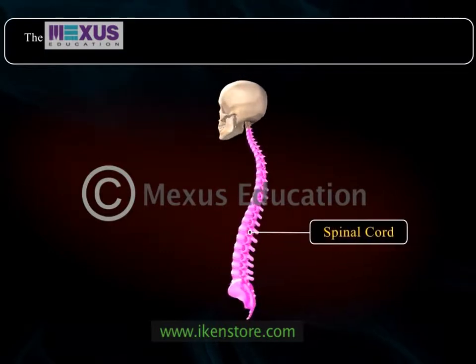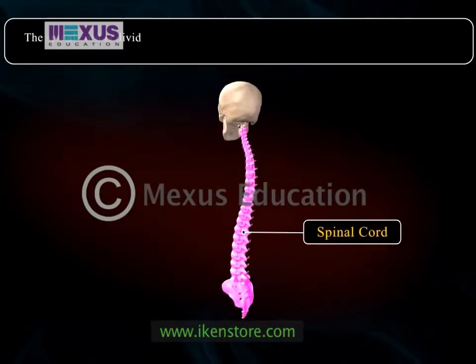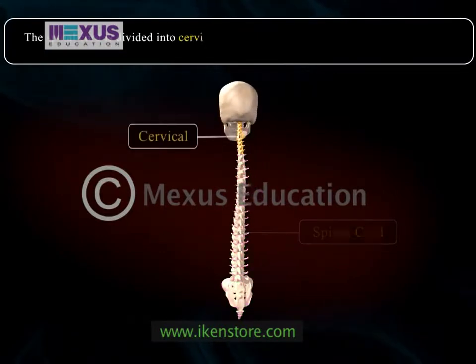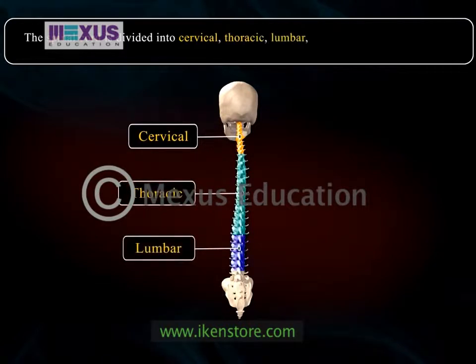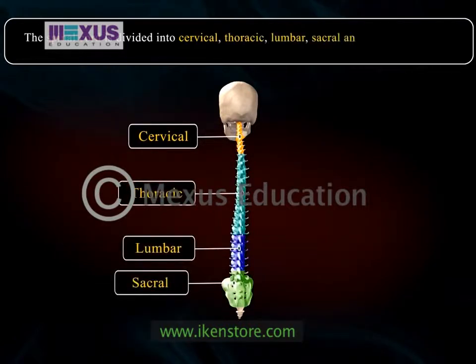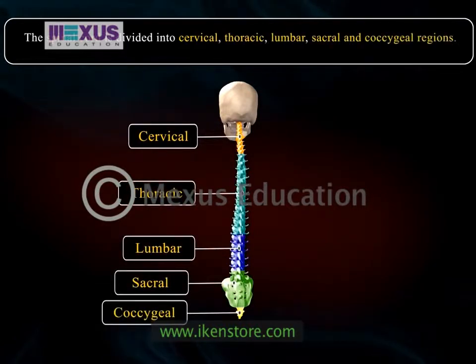The spinal cord is divided into cervical, thoracic, lumbar, sacral and the coccygeal regions.